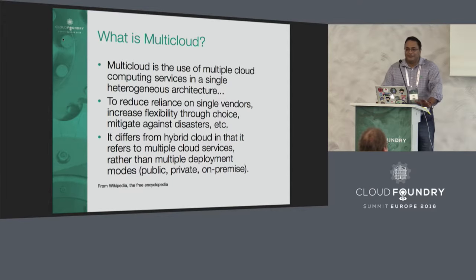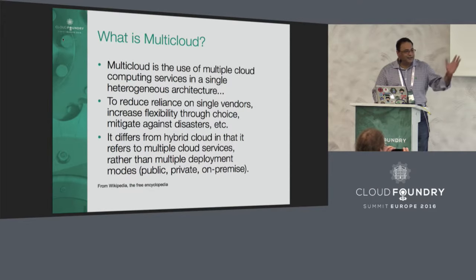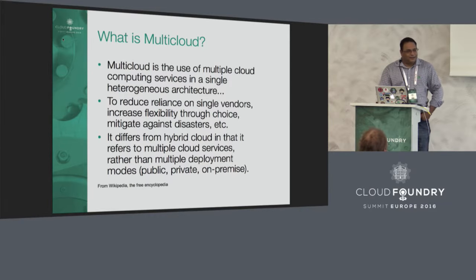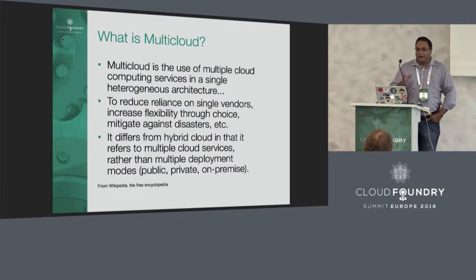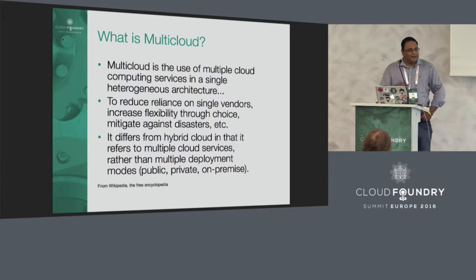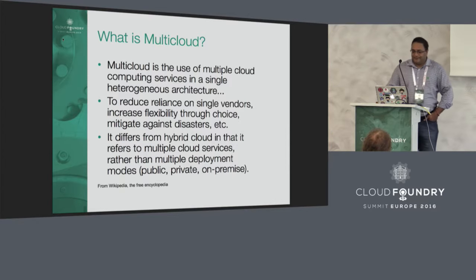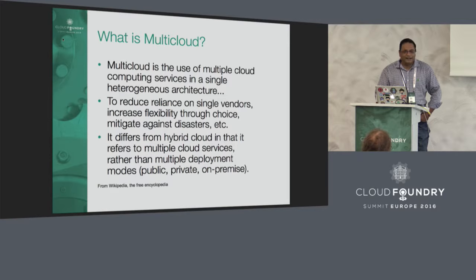A little bit about what multi-cloud is and why it's important. This is the Wikipedia definition: multiple cloud computing services in a single heterogeneous architecture. As we talked about the examples, people are using this fairly loosely. We're not trying to say that multi-cloud is something where you want to put all applications distributed across them. The main objective was to reduce reliance on a single vendor — reduce lock-in.